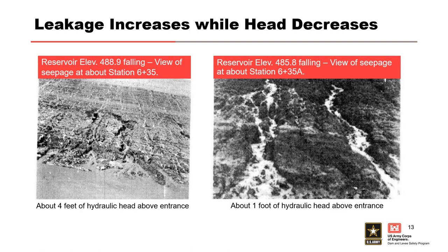In the photo on the left, the reservoir is at elevation 488.9 and falling, about four feet of hydraulic head above the upstream entrance location. In the photo on the right, the reservoir is at elevation 485.8 and falling, about one foot of hydraulic head above the upstream entrance location. Although the hydraulic head difference decreased by about three feet between the two photos, the leakage appears to increase significantly, indicating the internal erosion pathways are increasing in size.